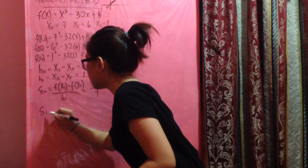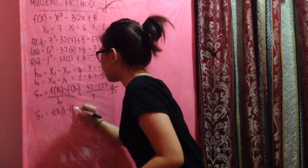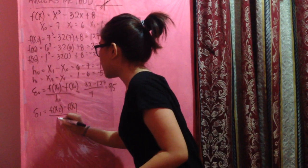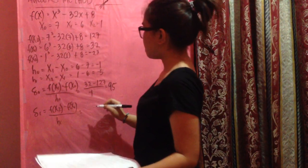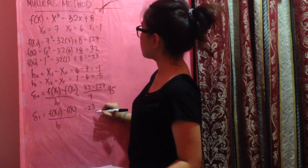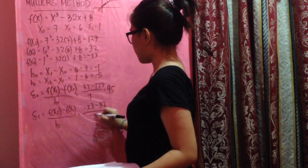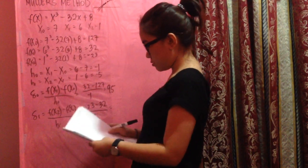For sigma 1, f(x₂) minus f(x₁) over h₁. f(x₂) negative 23, minus f(x₁) minus 32. h₁ negative 5, have the value of 11.